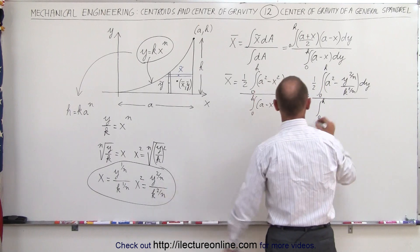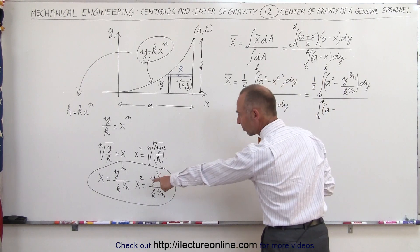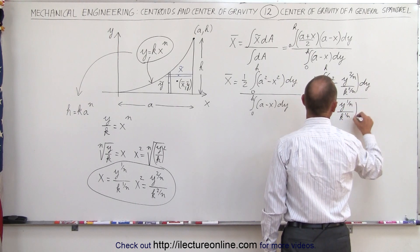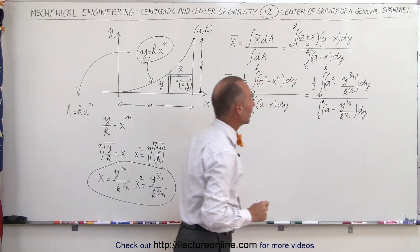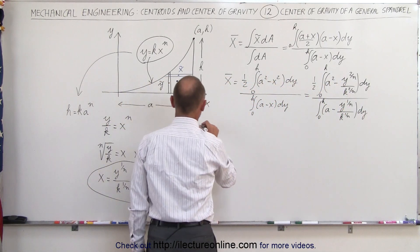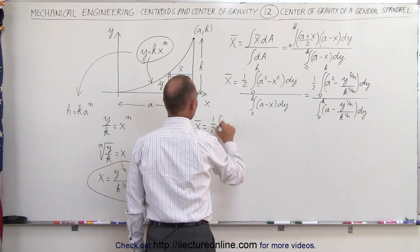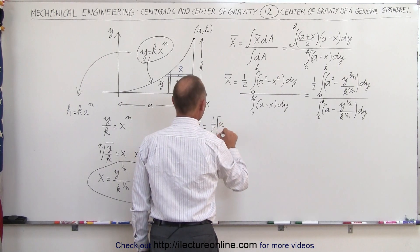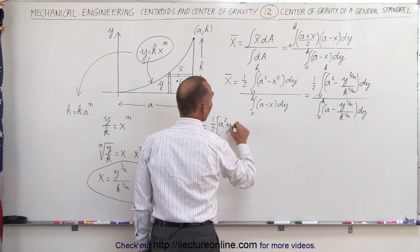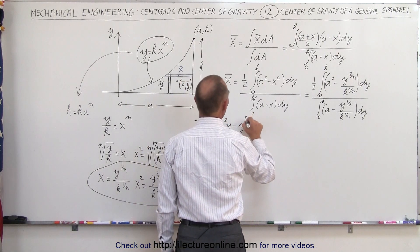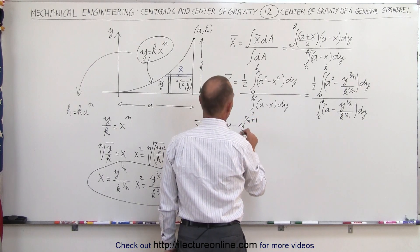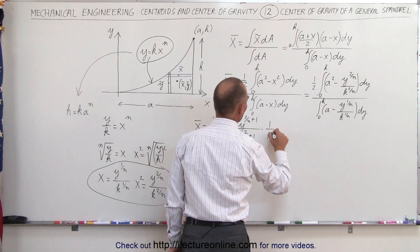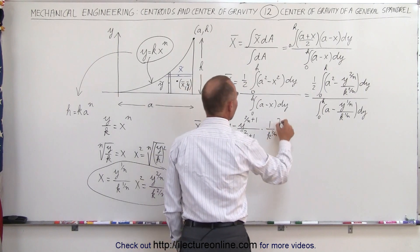In the denominator we get a minus x, which becomes a minus y to the 1/n power divided by k to the 1/n power, times dy, with limits from 0 to h. Now we're ready to integrate. The x-coordinate equals 1/2 times: a² times y minus y to the (2/n + 1) power divided by (2/n + 1) times 1 over k to the 2/n power, evaluated from 0 to h.